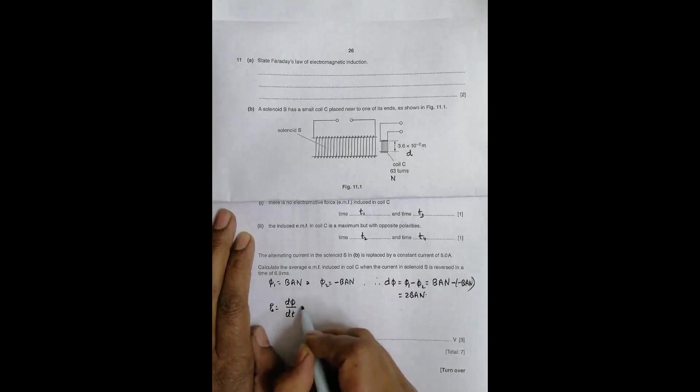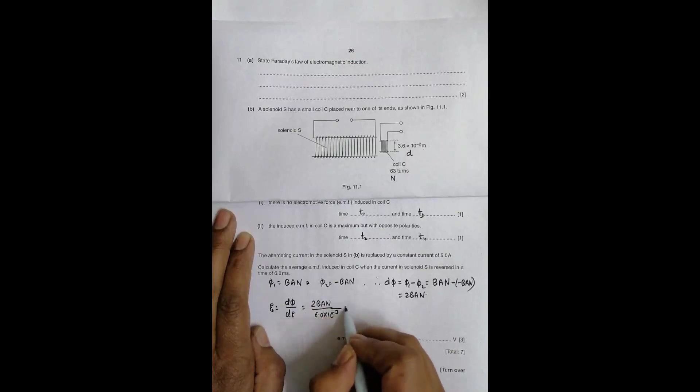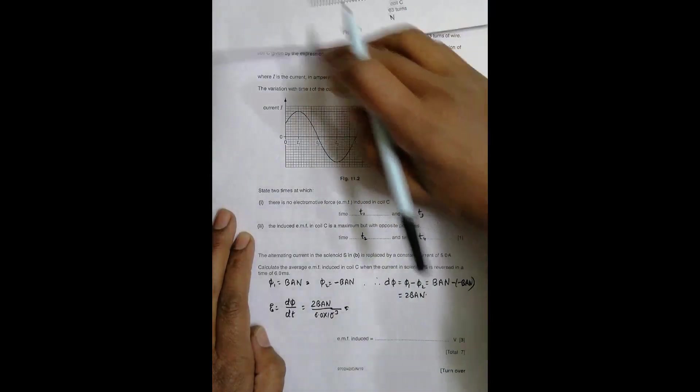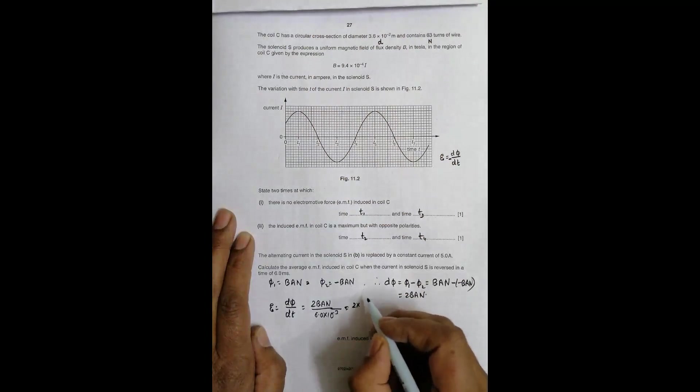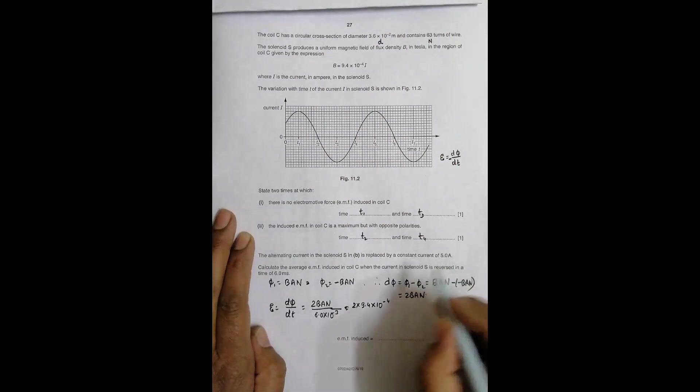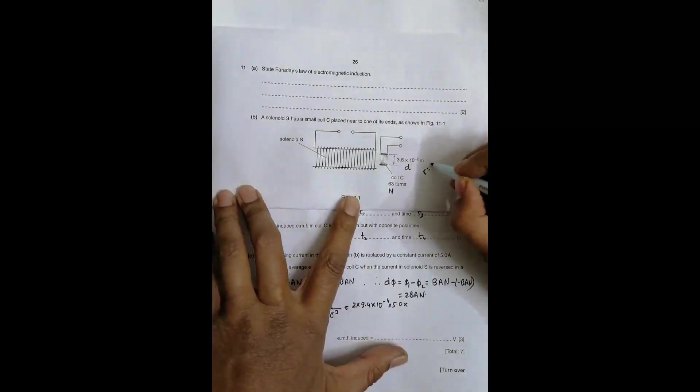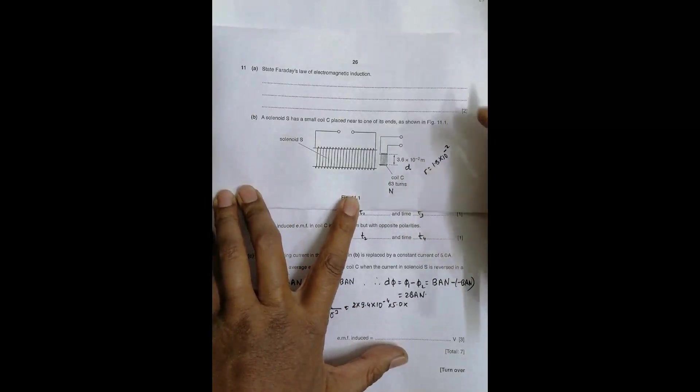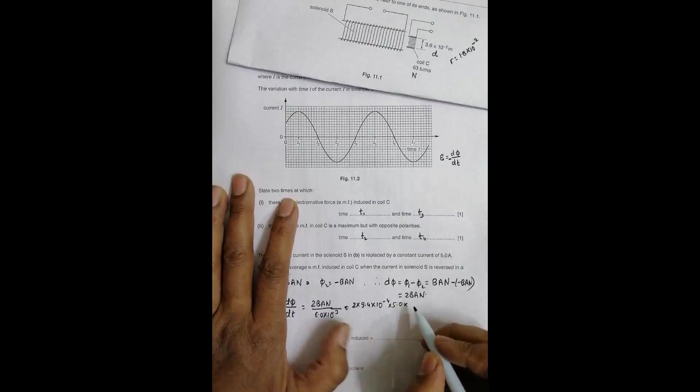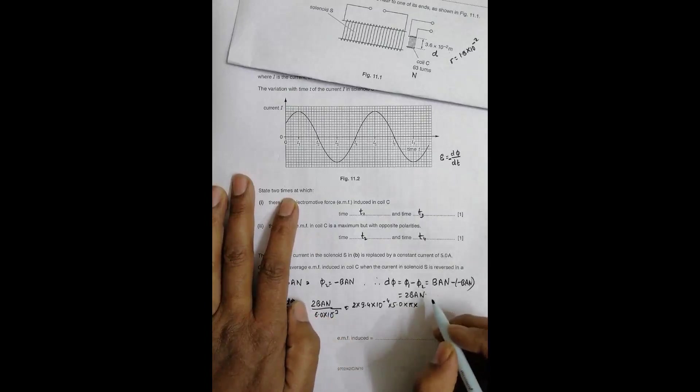The value of E = Δφ/Δt = 2BAN/(6.0 × 10⁻³). B is related to current, so B = 9.4 × 10⁻⁴ × I, where I = 5.0. The diameter is given, so radius = 1.8 × 10⁻², and area = π × (1.8 × 10⁻²)². Number of turns N = 63.